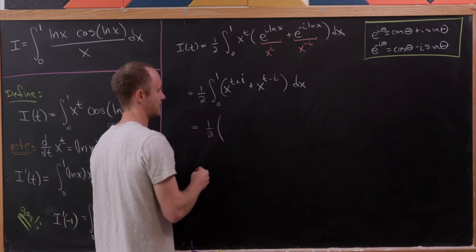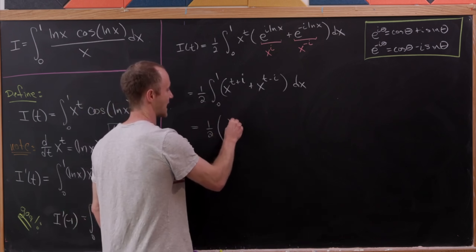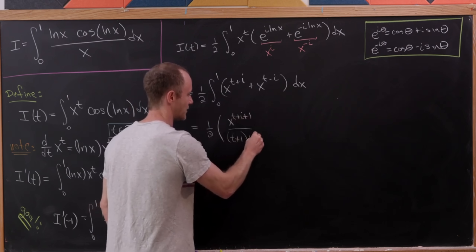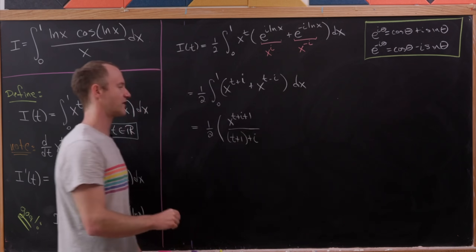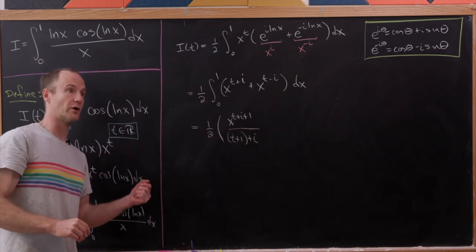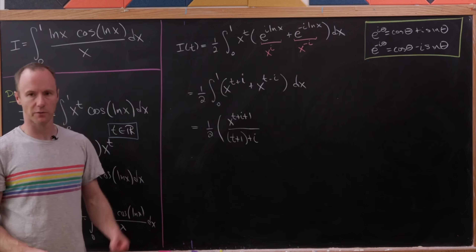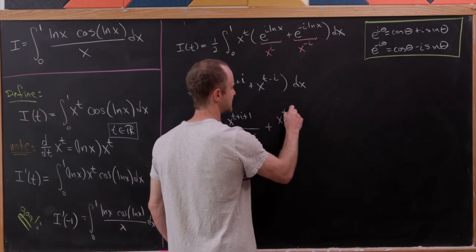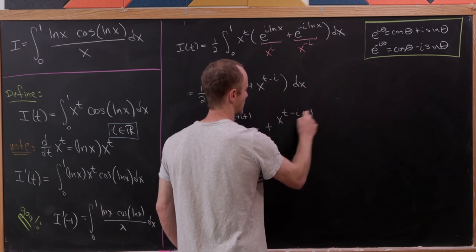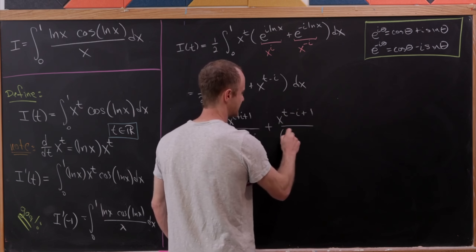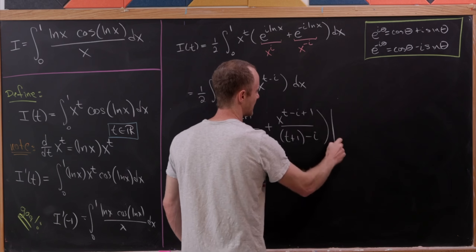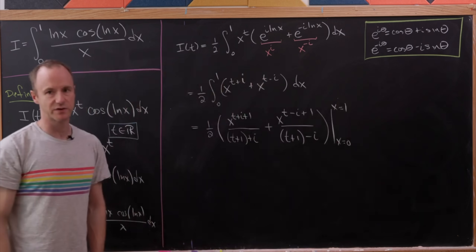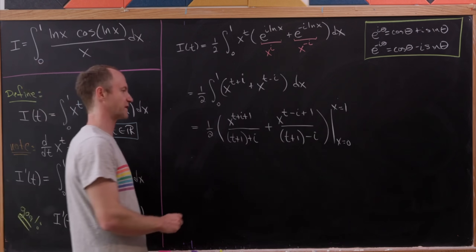That gives us one half times x to the t plus i plus 1 over t plus 1 plus i — writing it with real and imaginary parts separated — plus x to the t minus i plus 1 over t plus 1 minus i, evaluated from x equals 0 to x equals 1. At x equals 0, it's 0; at x equals 1, those numerators become 1.